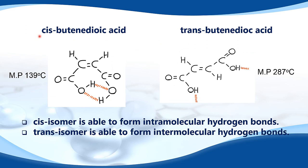Here is another example. We have cis-butenedioic acid and trans-butenedioic acid. The cis isomer has a melting point of 139 degrees C, and the trans isomer has a melting point of 287 degrees C. The reason is that the cis isomer is able to form intramolecular hydrogen bonds — shown here as red dashes — meaning hydrogen bonds within the molecule. The trans isomer forms intermolecular hydrogen bonds between molecules of butenedioic acid, and therefore has a higher melting point.